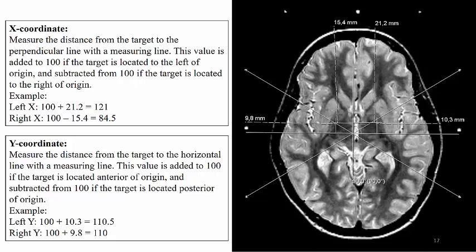In order to get the y-coordinate, we measure the distance from the horizontal line with the measuring line. This value is added to 100 if the target is located anterior of origin and subtracted from 100 if the target is located posterior of origin.